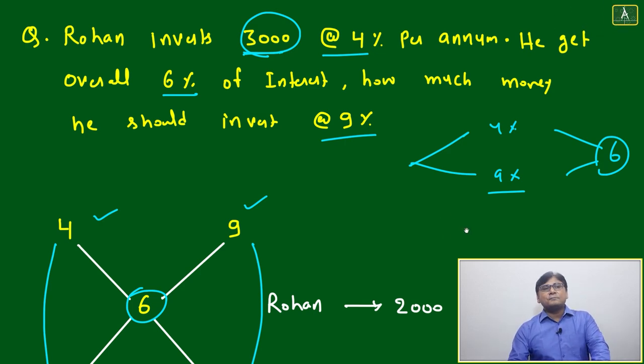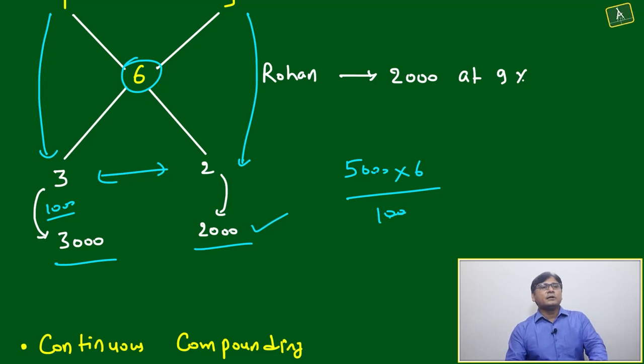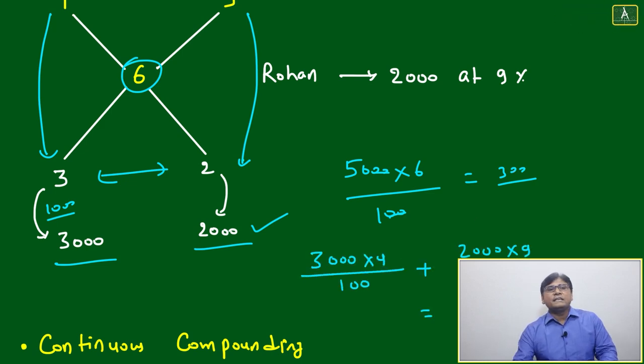Can we re-verify? 5000 into six for one year divided by 100 - it will become 300. He is getting total 300 interest at the rate of six percent if 5000 is invested. Can we just check?